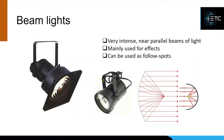One of the big disadvantages of beam lights is they all use a low-voltage, high-wattage lamp, so you tend to sacrifice lamp life. On the fixture on the left, for instance, you would get somewhere between 50 and 100 hours, which is not a lot — particularly if you're relying on it for use as a follow spot.